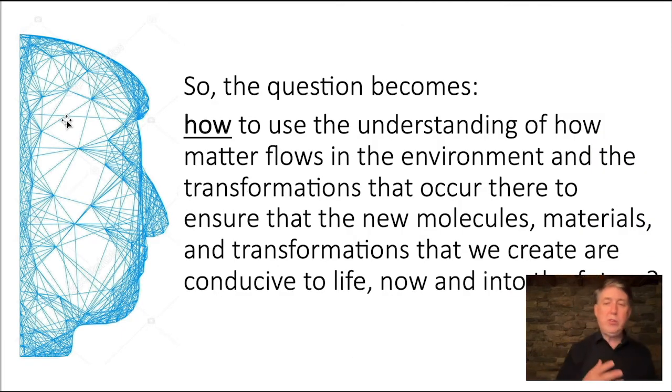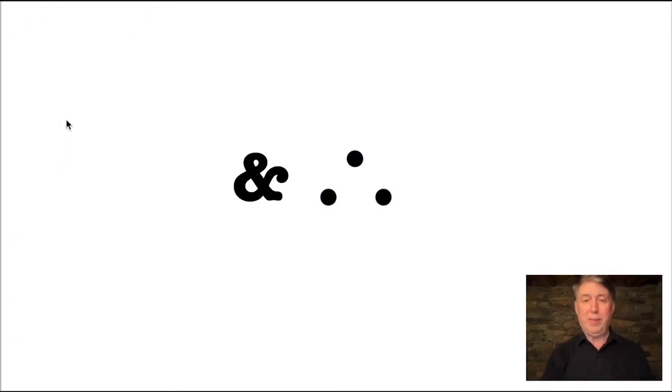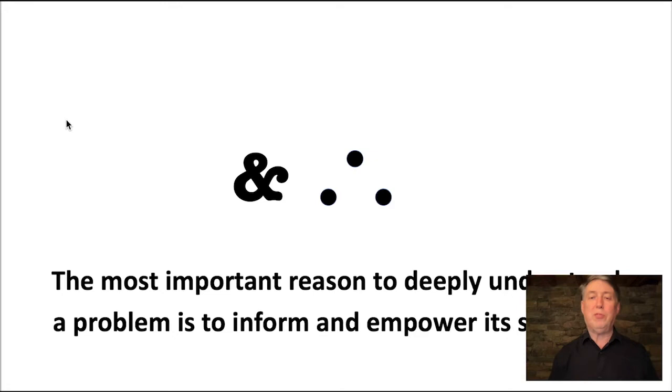The question becomes, how do we use the understanding that environmental chemistry gives us about the material flows and transformations and use it to ensure that the new molecules, the new materials, and the new transformations are going to be conducive to life now and into the future? That's the big 'and therefore.' With all of the knowledge provided by environmental chemistry, the 'and therefore' is we must do things differently. Because the only reason to deeply understand the problem is to inform and empower its solutions.